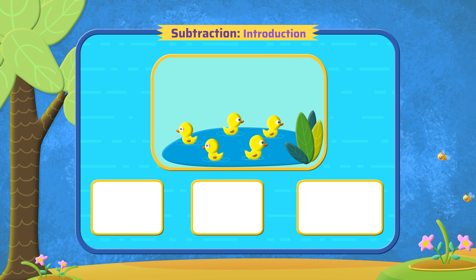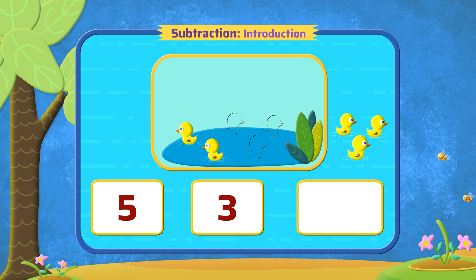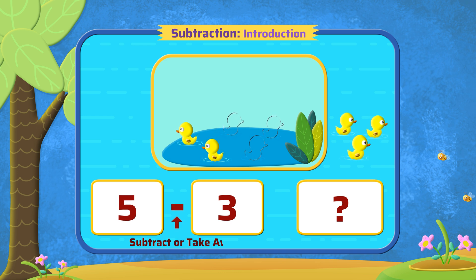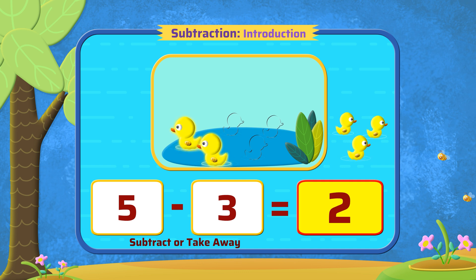Let's look at a few more examples. We have five ducks and three swim away, so how many ducks are left? Out of the five ducks, we subtract or take away three ducks, so we are left with two. This is called subtraction.